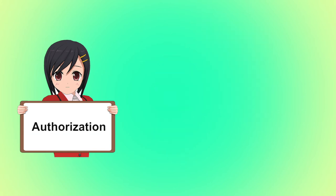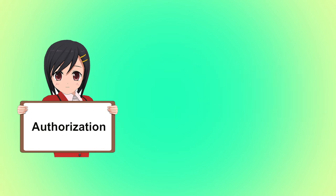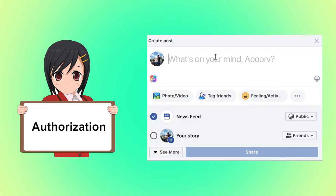Second is authorization. It is the process of ensuring that an employee has enough access rights to particular information so that he can perform intended actions. For example, once you enter valid credentials to your Facebook account, you are authorized to perform all that you have permission to do, like post pictures, post videos, post statuses, etc.